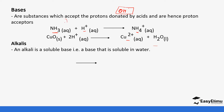The Brønsted theory is able to explain why ammonia is basic. Although we know ammonia dissolves in water to form ammonium hydroxide, you can see the ammonium ion is being formed first. An alkali is a soluble base — there are some bases that are soluble and others that are insoluble. Bases that are soluble are referred to as alkalis.